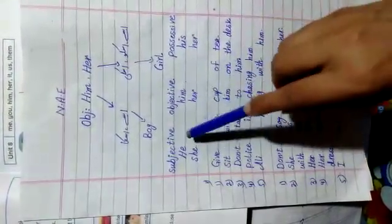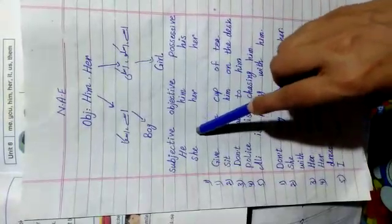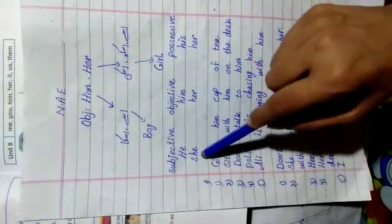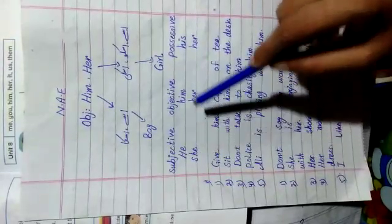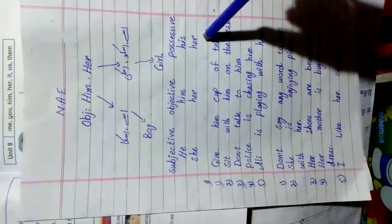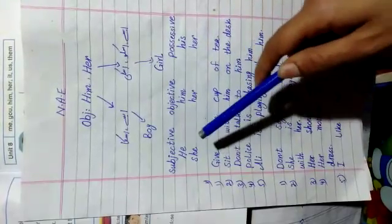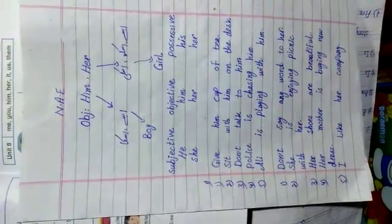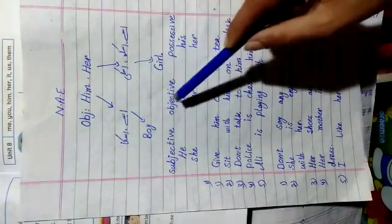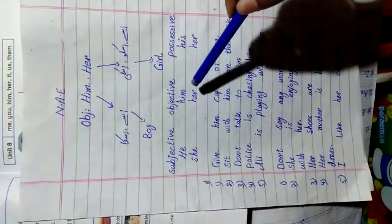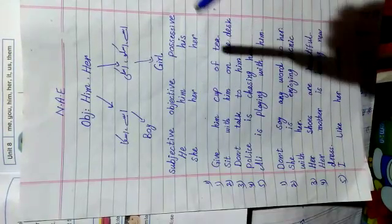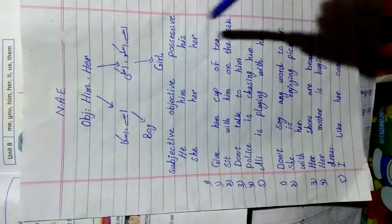Him is the objective case of 'he' and its possessive case is 'his'. Her is the objective case of 'she' and its possessive case is also 'her'. When some person does some action it is the subjective case, when some work is going on with some person it is called the objective case, and when we want to talk about someone's possession — possession means 'milky' — it is called the possessive case.